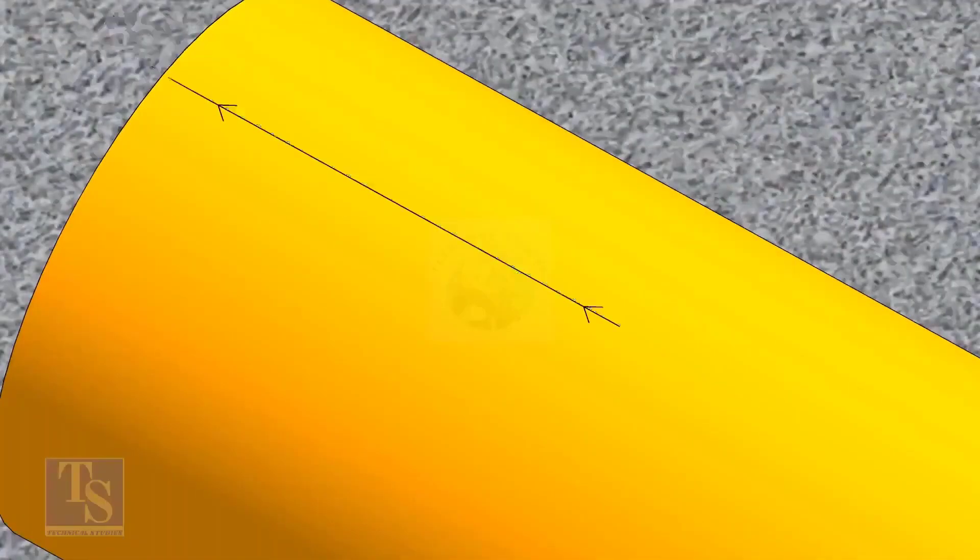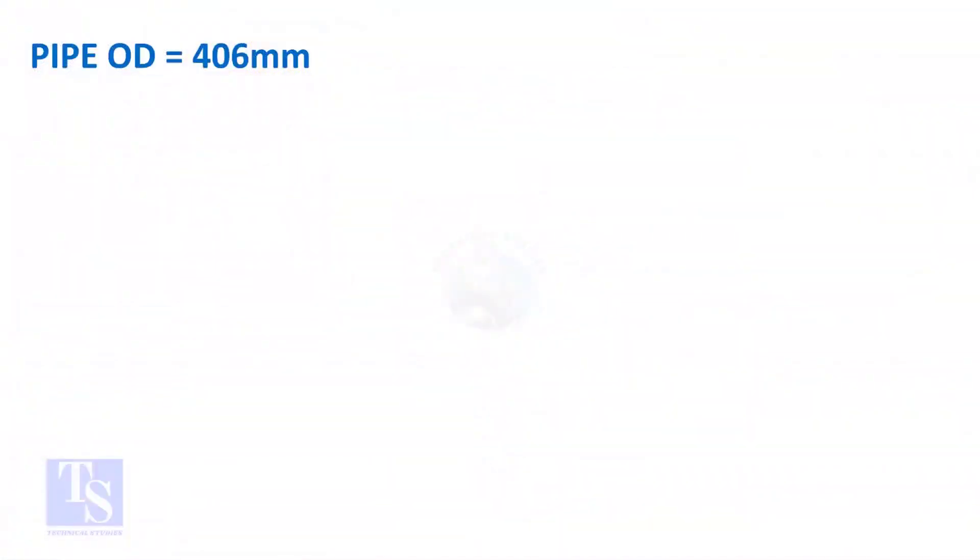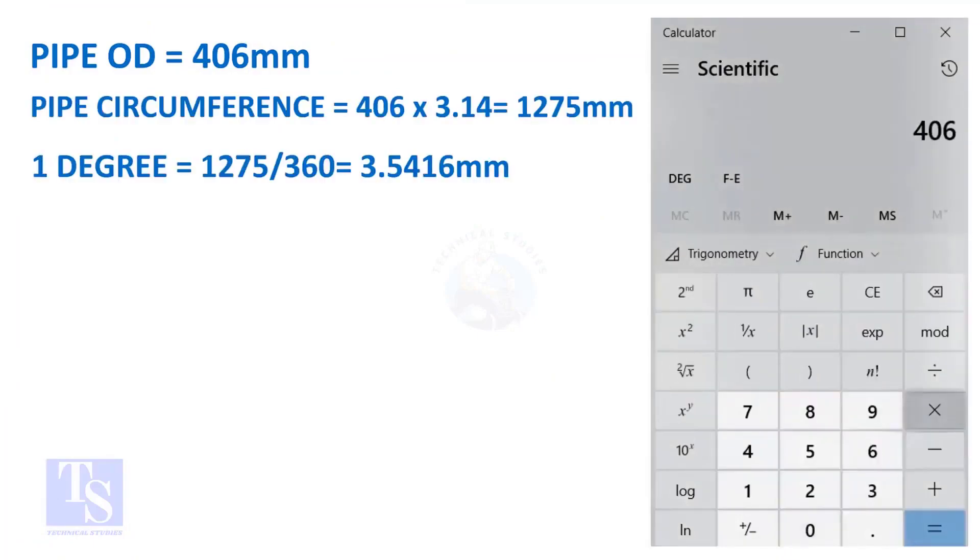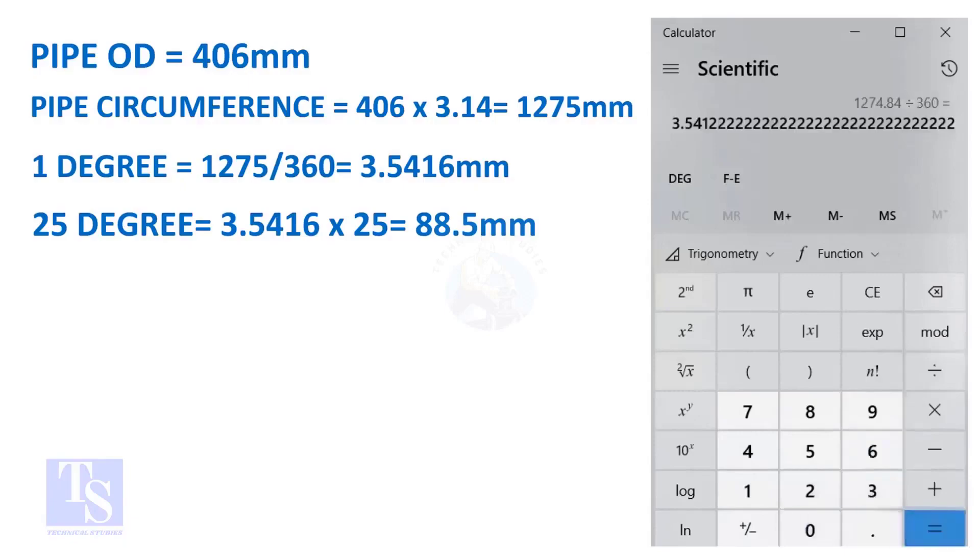Let us calculate the circumferential distance or arc length for 25 degrees. Multiply the OD by 3.14. You will get the circumference of the pipe. Divide the circumference by 360, you will get the arc length of 1 degree. And finally, multiply the 1 degree arc length by 25. Now you have the arc length of 25 degrees. You can apply this formula to get the arc length of any degree.